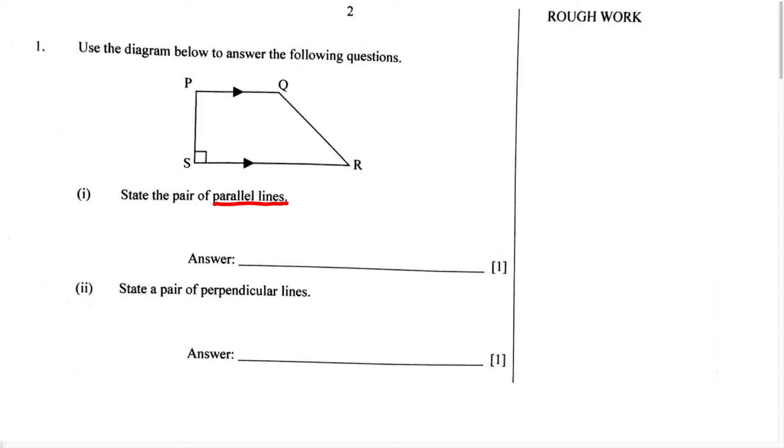Now we know parallel lines are going to be lines that are the same distance apart, and these lines will never intersect. When I say intersect, that means these two lines will never meet. Also, another key word to remember is going to be this word, pair. This word is very important. Now when we talk about a pair, we're talking about two. So they want us to state the two parallel lines in this polygon.